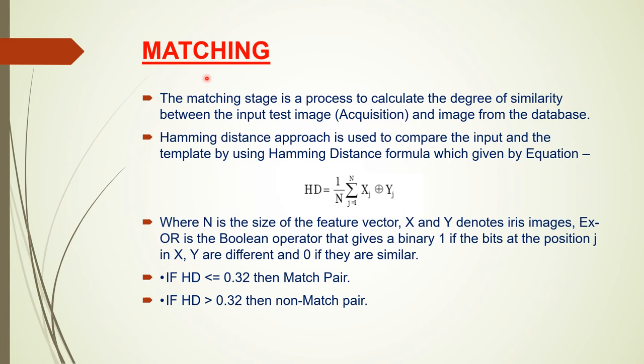Matching: the matching stage is a process to calculate the degree of similarity between the input test image and the image from the database. The Hamming distance approach is used. The formula uses N as the size of the feature vector; x and y denote iris images; and the XOR boolean operator gives a binary 1 if the bits at position j in x and y are different, and 0 if they are similar. If the Hamming distance (HD) is less than or equal to 0.32, the pair is declared a match; otherwise, it is a non-match pair.